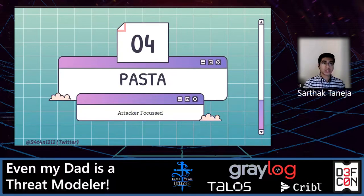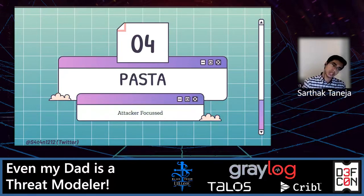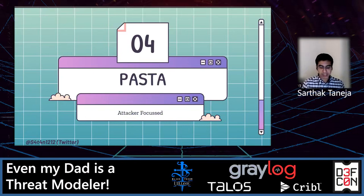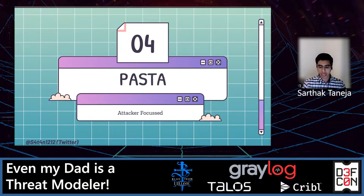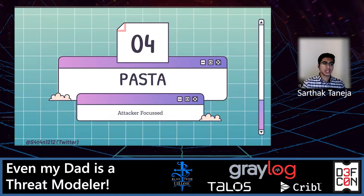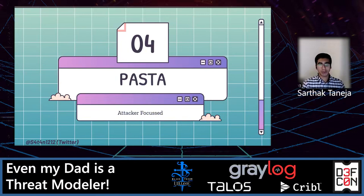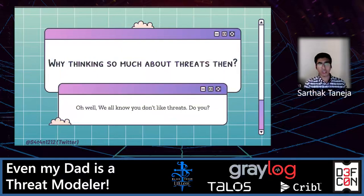Then we have PASTA — Process for Attack Simulation and Threat Analysis. It's a seven-step, risk-centric methodology. Just like TRIKE, it also works on risk management thinking, but it measures business impacts more from the attacker's point of view. The intent of this method is to provide a dynamic data identification, enumeration, and scoring process. Once the threat model is completed, security engineers can develop a detailed analysis of the identified threats. Finally, security controls can be enumerated. The methodology is intended to provide an attacker-centric view of the application.